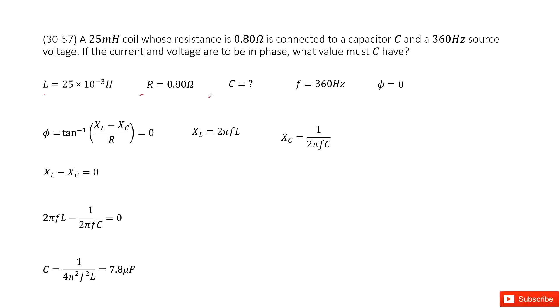R is given, C is what we don't know. So now we have the circuit. It tells you the source frequency is given, and if the current and voltage are to be in phase.